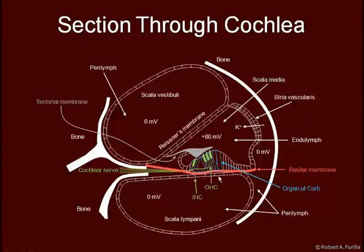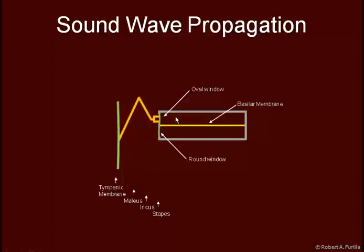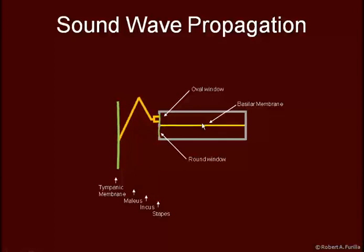Here we have the basilar membrane and the cochlear nerve. This region is called the stria vascularis. We call this fluid perilymph here, and this region we call endolymph. The tympanic membrane pushes on the malleus, the incus, and the stapes. The stapes pushes against the oval window, pushing fluid in this direction, which then pushes back on the round window, allowing the basilar membrane to vibrate. It's this vibration that we transduce into electrical energy.